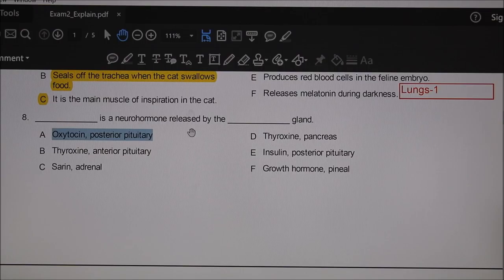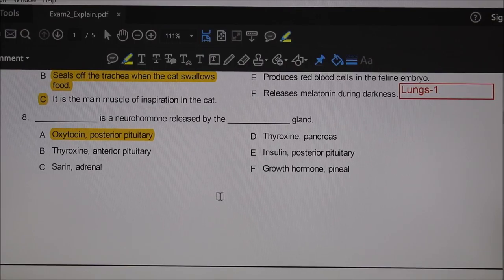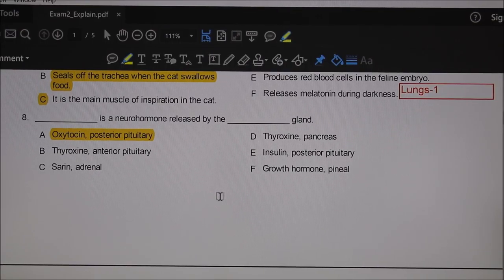Last question of that page: something is a neural hormone released by the blank. The only one that kind of makes sense is oxytocin. Oxytocin is a neural hormone released by the posterior pituitary gland.